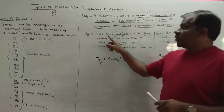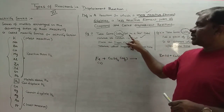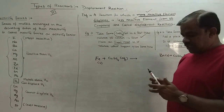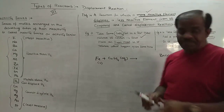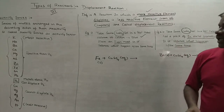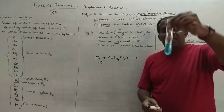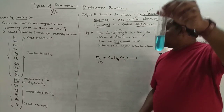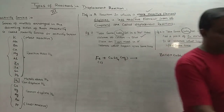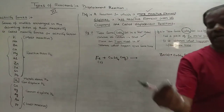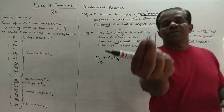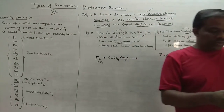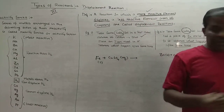In Example 1, we take some amount of copper sulfate solution in a test tube. Copper sulfate solution is generally blue in color. Then we add some shining iron nails to it. I am adding an iron nail to the copper sulfate solution and will observe what happens after some time.